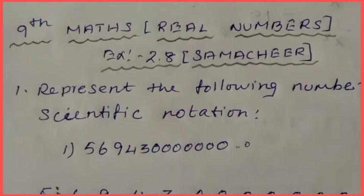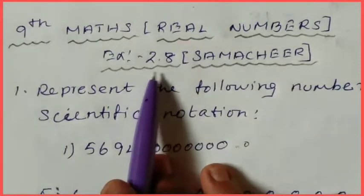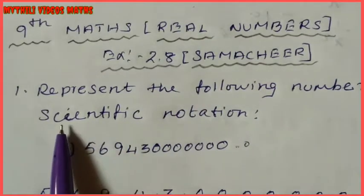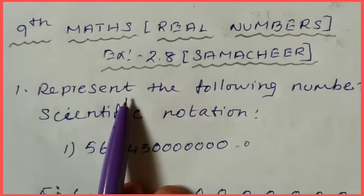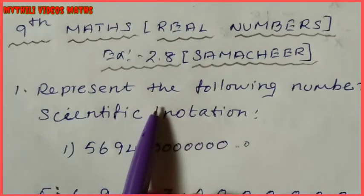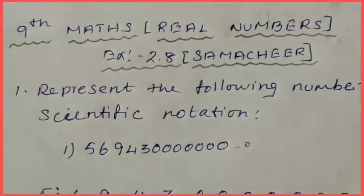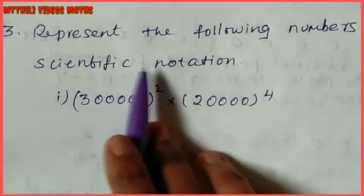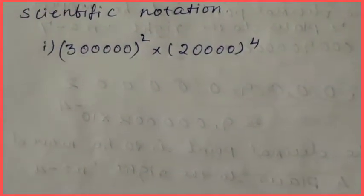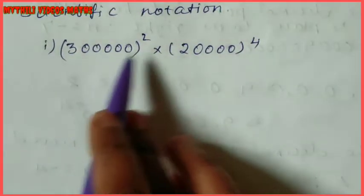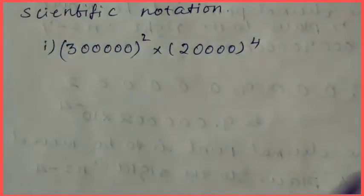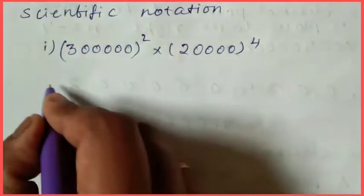Hi students, this is 9th class Math - Real Numbers. We are looking at scientific notation. We have completed the first and second subdivisions already. Now we have to see the third sum: represent the following numbers in scientific notation.